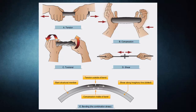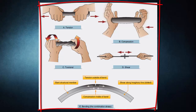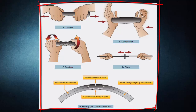When a material is subjected to a load or force, that material is deformed regardless of how strong the material is or how light the load is. There are five major stresses to which all aircraft are subjected: tension, compression, torsion, shear, and bending.